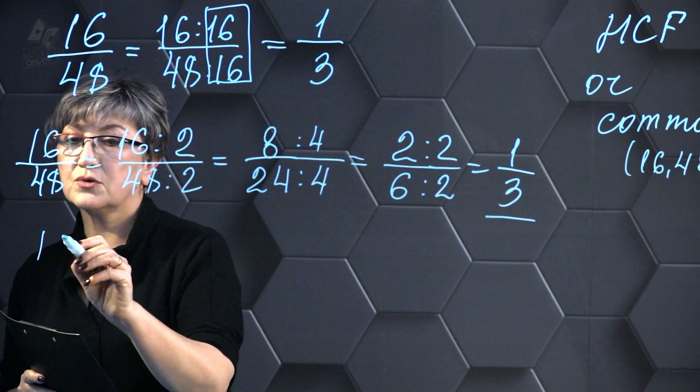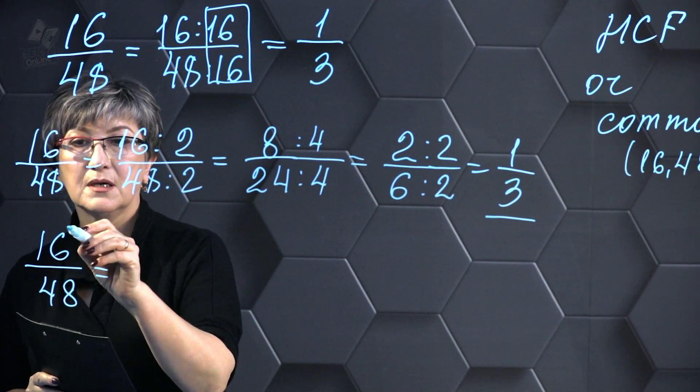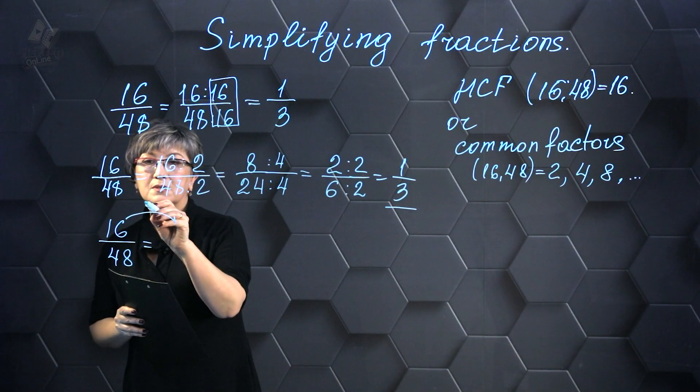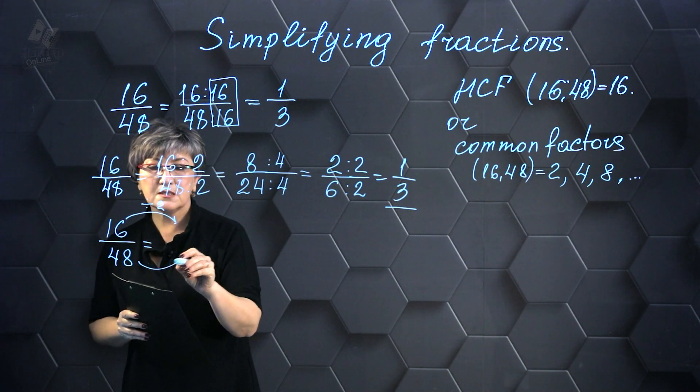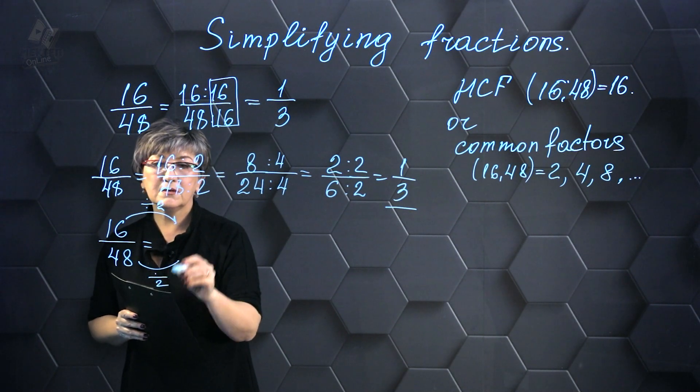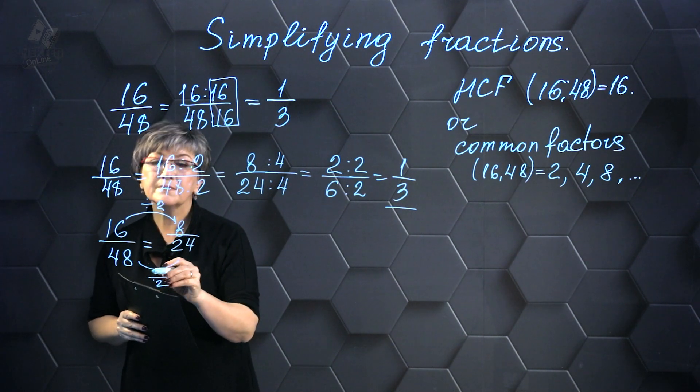On occasion, the subsequent notation is employed, namely 16/48, as a means of representation. They exhibit division here. We divide by 2 and here is the outcome of the division process. We divide the number by 2. As a result, it turns out to be 8/24.